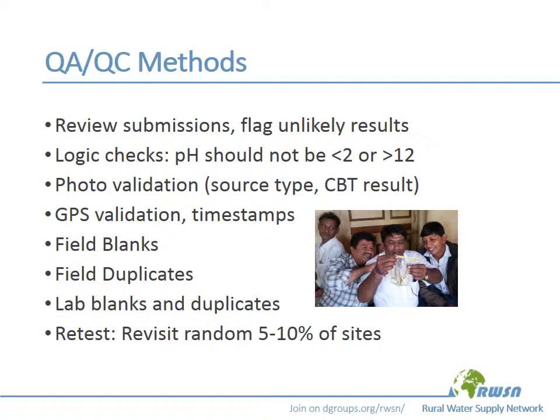Field blanks and duplicates are QAQC samples that can be instrumental. Typically 5 or 10 percent of samples as QC samples can help us ensure that our water quality analysis methods are being implemented appropriately. Lab blanks and duplicates can be useful if we're doing any analysis in a laboratory. It can also be helpful to revisit a random subset of sites to confirm that items that should be relatively stable over time — for example, what type of water source it is, where it's located, or things like fluoride and conductivity that shouldn't vary wildly over time — ensure reasonable consistency of repeated measures, although we wouldn't expect perfect consistency for things like microbial contamination, which can fluctuate quite a bit over time.